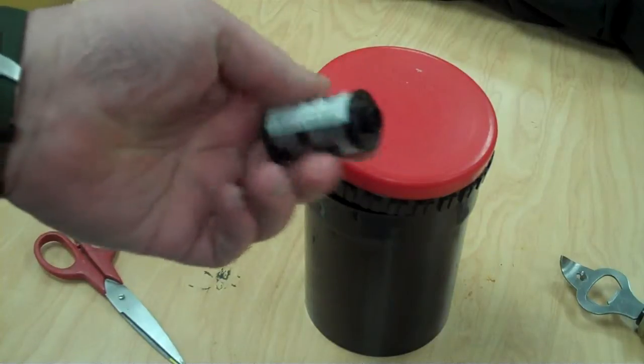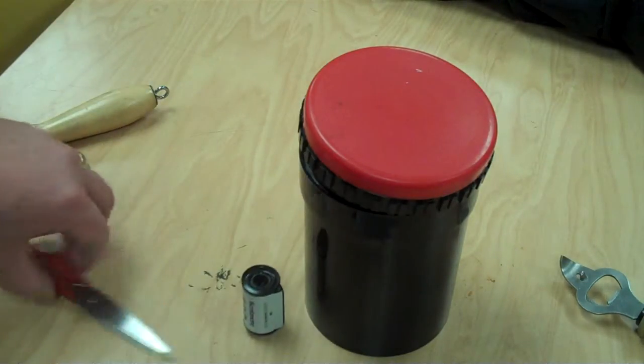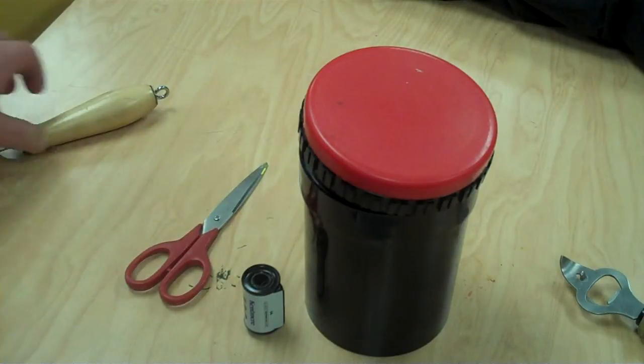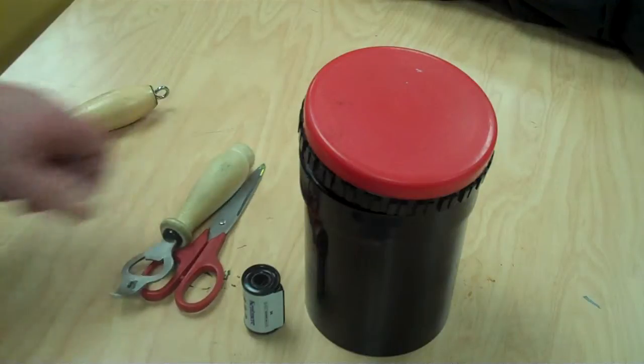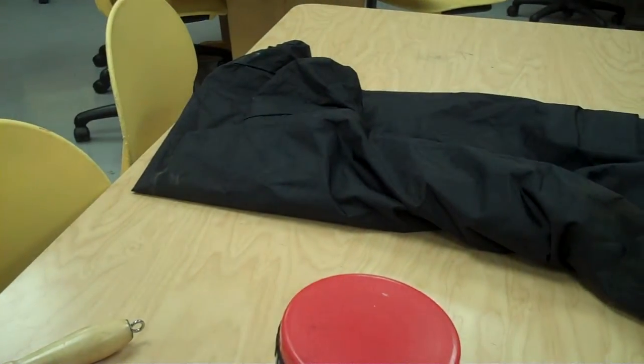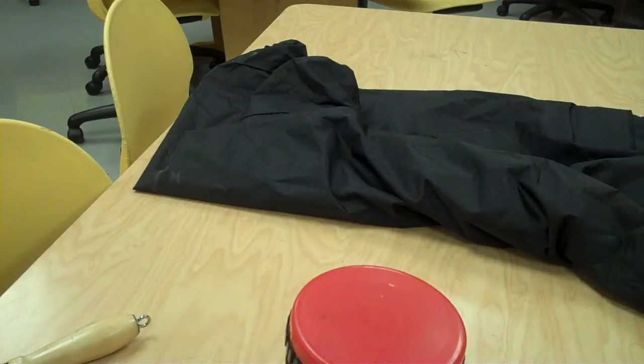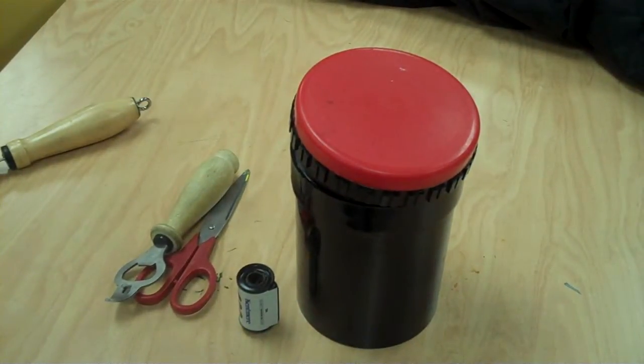Now, just for those of you that are wondering, all of this stuff, the film, a pair of scissors, and then a bottle opener, has to be put into a light proof bag, which is right there. It's got enough space for your arms, you put everything in and you zip it up. So you have to do this process completely by touch. So today, we're going to practice loading a reel and you're about to see how that's done.